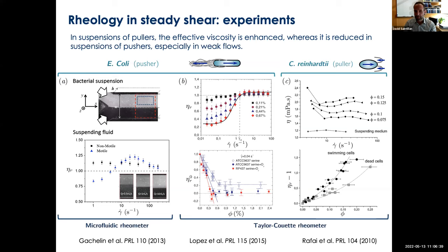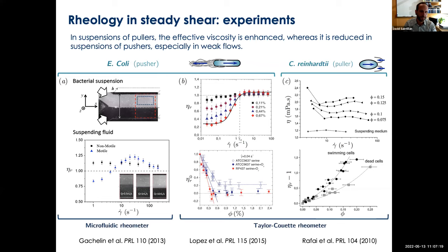In the microfluidic rheometer, one inlet flows a bacterial suspension and the other flows clear suspending fluid. These two streams meet in the main channel, and by measuring the position of the interface between the two fluids, you can back out the viscosity of the bacterial suspension. They measure the relative viscosity — the viscosity of the bacterial suspension divided by the solvent viscosity — as a function of shear rate, for both non-motile cells and motile cells. The non-motile cells show a nearly constant viscosity, shear thinning slightly, and above one. The motile suspension behaves very differently: viscosity below one at low shear rates, then shear thickens, then shear thins.